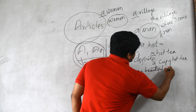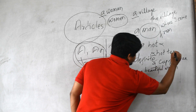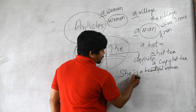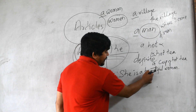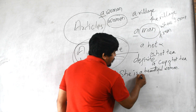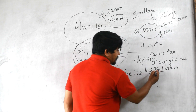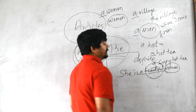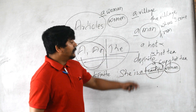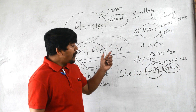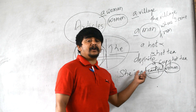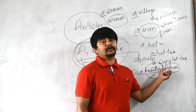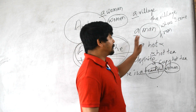So the conclusion is: you are not allowed to use a or an before an adjective alone. For example, 'she is a beautiful' is wrong. If you want to use a or an before an adjective, that adjective must be followed by a noun — like 'she is a beautiful woman.' This is how we use it.